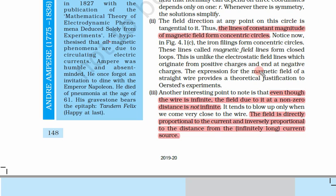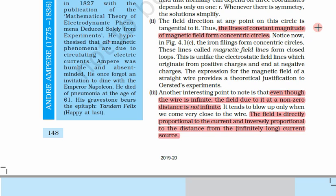The expression for the magnetic field of a straight wire provides a theoretical justification of Oersted's experiment. We will see that magnetic field lines form closed loops instead of open lines.